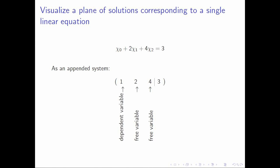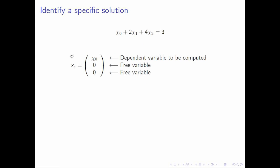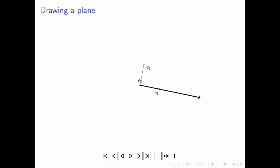You just did the homework that walks you through exactly the same steps for the third equation. You identify your free variables and your dependent variable, you plug in, you choose your free variables to be equal to zero, you solve for your dependent variable — that gives you a specific solution, which can then be visualized as such.